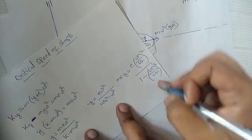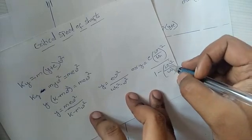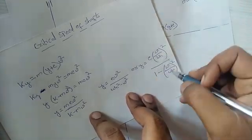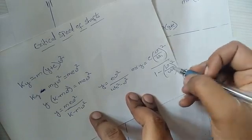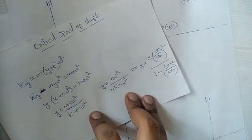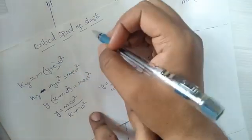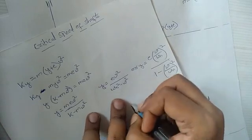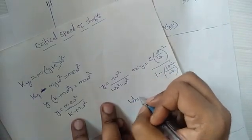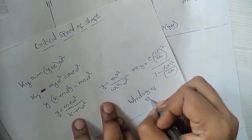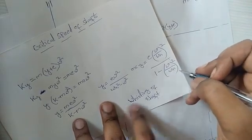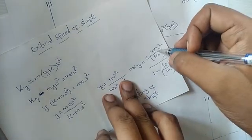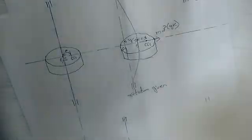What we see here is omega is the forcing frequency, that is the rotation of the shaft, and omega_n is the natural frequency of the system. E is the eccentricity. When omega is equal to omega_n, this would be 1 minus 1, and Y goes to infinity. This is called the critical speed of the shaft. Critical speed means the speed at which there is resonance, that is omega equals omega_n. This is also called whirling of the shaft.